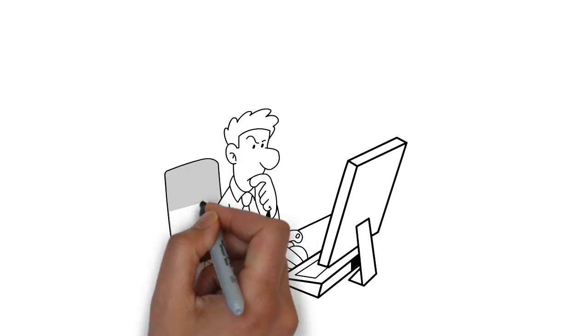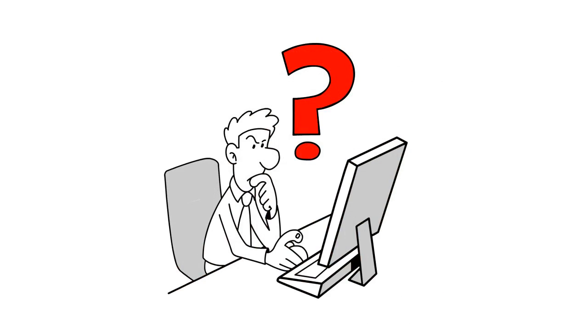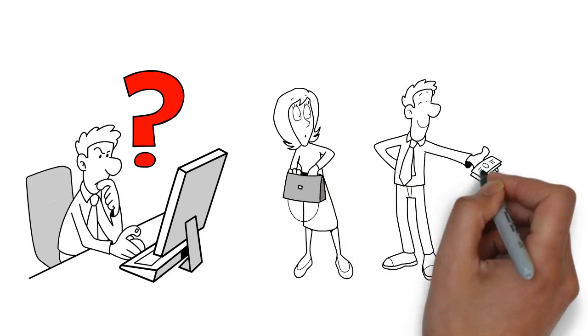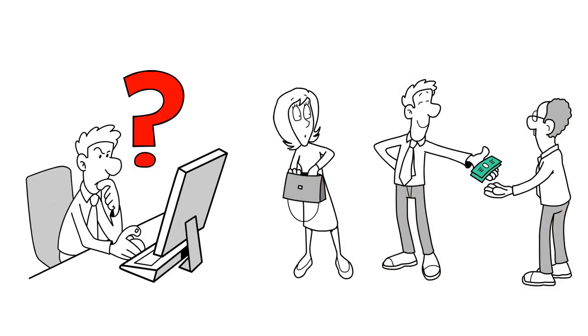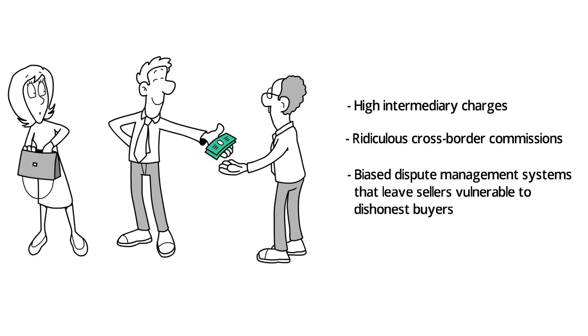When it comes to selling goods through classified sites, buyers and sellers are never really sure of what they're getting. Although escrow agents can be used to facilitate transactions, there are also problems of high intermediary charges, ridiculous cross-border commissions, and biased dispute management systems that leave sellers vulnerable to dishonest buyers.